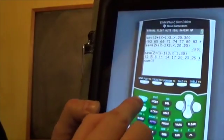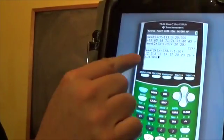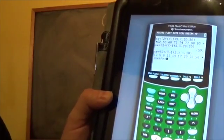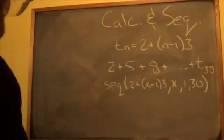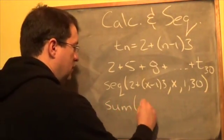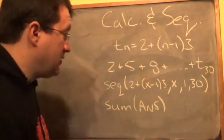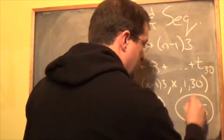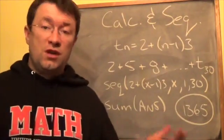Choose 'sum', then press Second, then the negative symbol to get the previous answer. The calculator will sum up that sequence. Press Enter and the result is 1365 — that's the sum of the first 30 terms of the sequence.